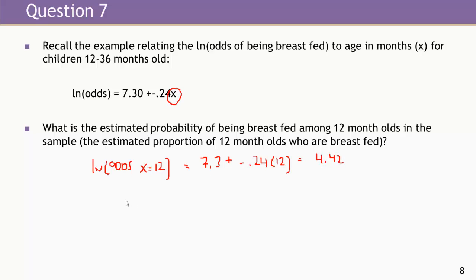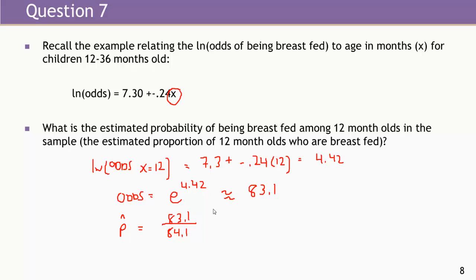The log odds for 12-month-olds is 4.42. To get the odds, we exponentiate 4.42, which is approximately 83.1. To get the probability, we take 83.1 divided by 84.1, which equals approximately 0.988, or rounding to 0.99. So almost 99% of the 12-month-olds in the sample are estimated to be breastfed, based on this logistic regression model.